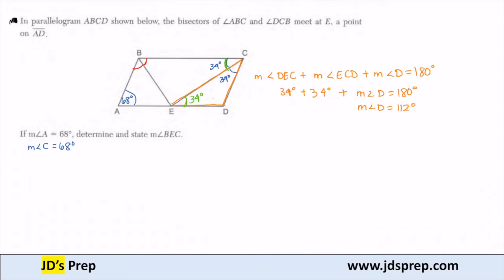So now we can fill that in. So if D is 112, opposite angles are congruent in a parallelogram. So opposite of that, that means that angle B is also 112 degrees. And angle B is bisected, so each one of those is half of 112, which means that each piece here is 56 degrees.